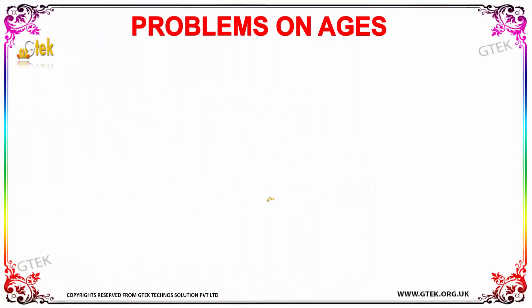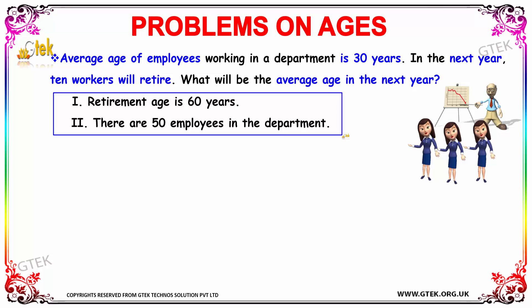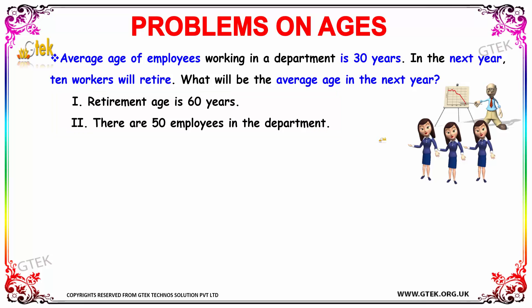Let us move on to our next example. It is given that the average age of employees working in a department is 30 years. In the next year, 10 workers will be retiring. We have to find the average age of the employees next year. Two supporting facts are given: the retirement age is 60 years, and there are 50 employees in the department.